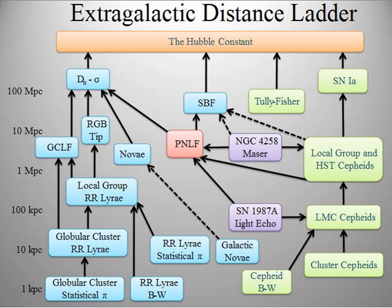The amount of shift is quite small, measuring one arcsecond for an object at one parsec's distance, and thereafter decreasing in angular amount as the distance increases. Astronomers usually express distances in units of parsecs; light years are used in popular media. Because parallax becomes smaller for a greater stellar distance, useful distances can be measured only for stars which are near enough to have a parallax larger than a few times the precision of the measurement.